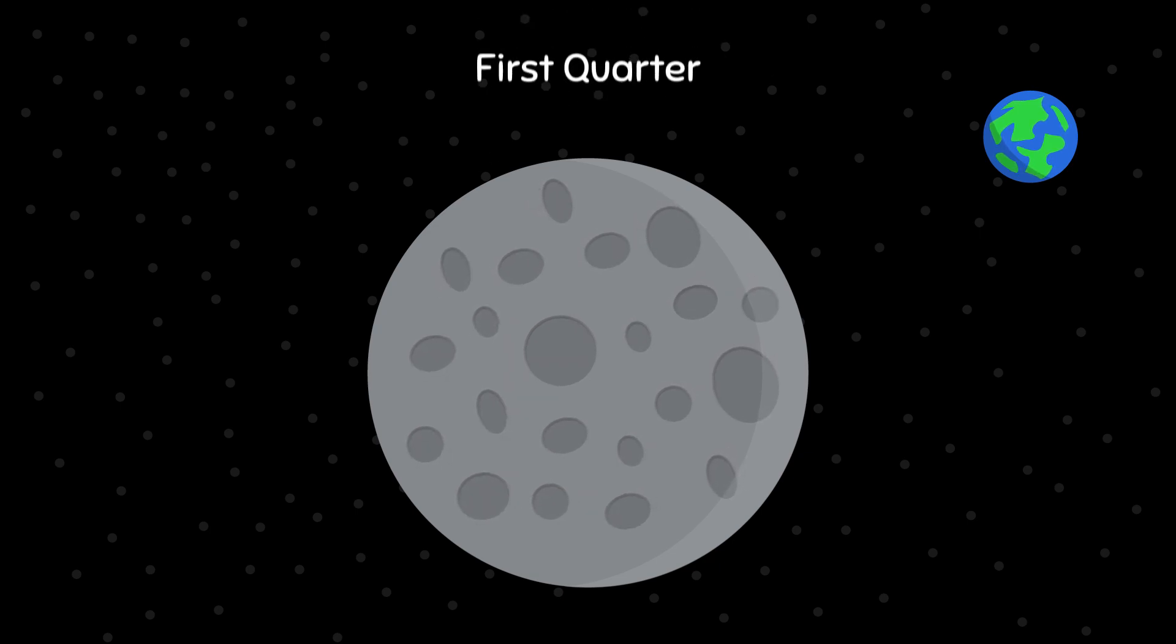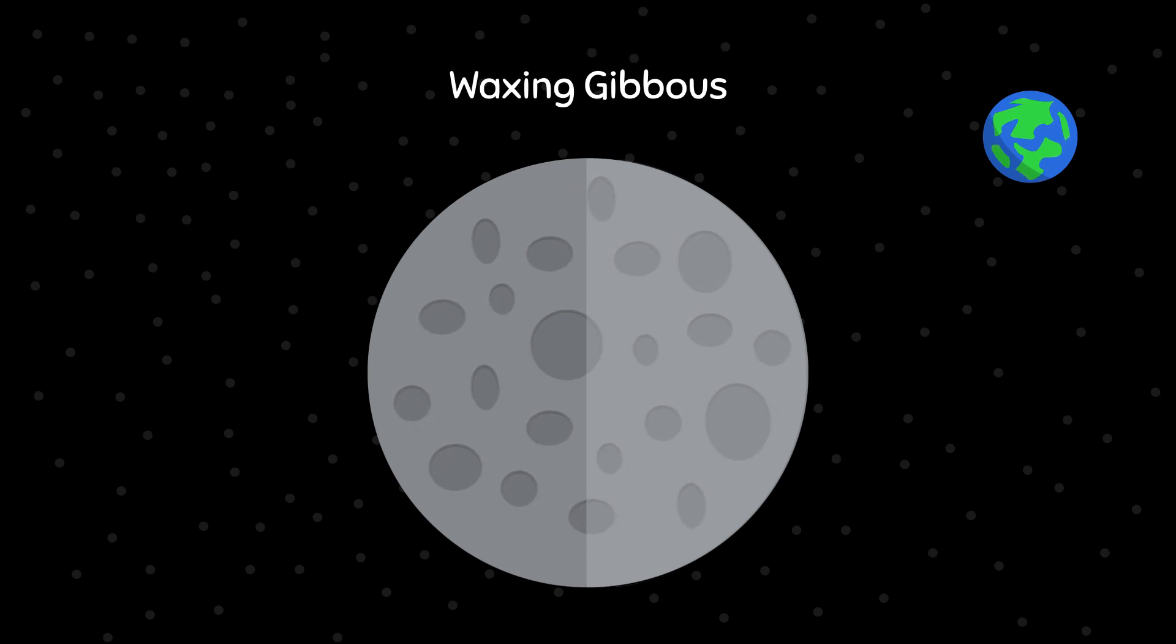The phase First Quarter means the Moon is 50% lit and 50% dark. The phase Waxing Gibbous means the right side of the Moon is 51 to 99% lit.